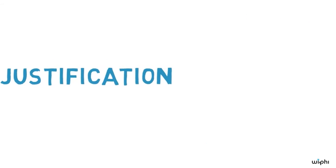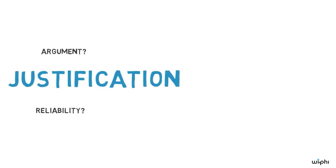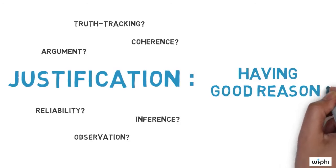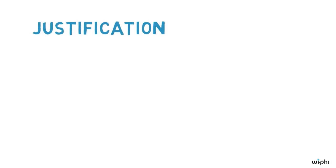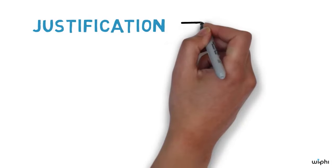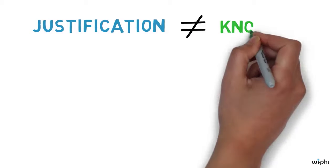The nature of justification is controversial. Different JTB theorists had different ideas about it. But let's say it has something to do with having good reasons for your belief. If we don't want the JTB analysis to be a circular definition, we have to say that being justified isn't the same thing as knowing.